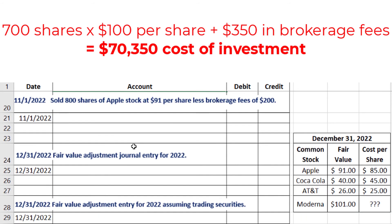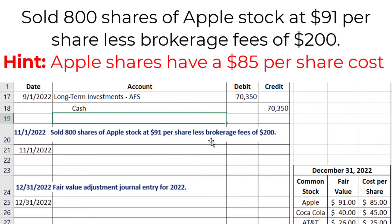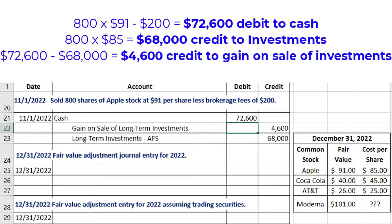Next, on November 1, 2022, 800 shares of Apple stock were sold at $91 per share, less brokerage fees of $200. To find the cash, we take the number of shares sold multiplied by the price per share and subtract the brokerage fees. Then we find the long-term investment amount by taking the cost per share of $85 for Apple, multiplied by 800 shares, which gives us $68,000. The difference between those two numbers goes on the credit side, so that's a gain on sale of long-term investments.